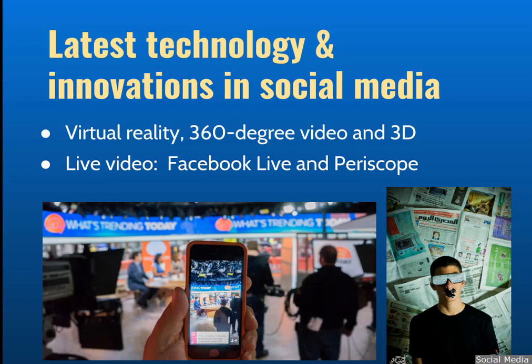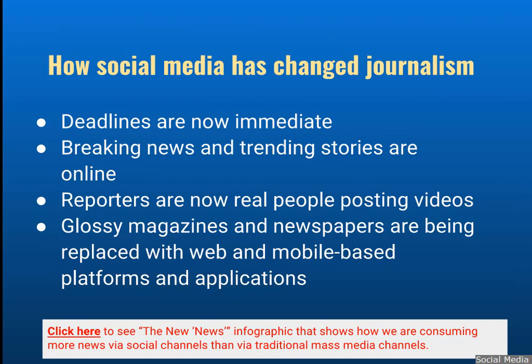Social media has changed journalism. Deadlines are now immediate. There's no more writing your story tonight and turning it in to come out in the paper tomorrow. You need to be able to write it, get your pictures taken, your videos shot and edited, and get it posted and out on social media immediately. Breaking news and trending stories are online — again, no more having to wait. Reporters now have to do it all: write, take pictures, do the videos. And you'll find that most every magazine and newspaper that were formally print only are now not only online but available as interactive applications that you can access with your smartphone or your tablet.